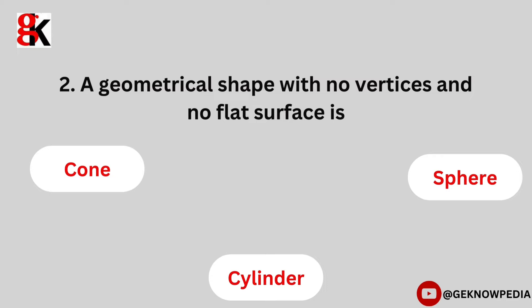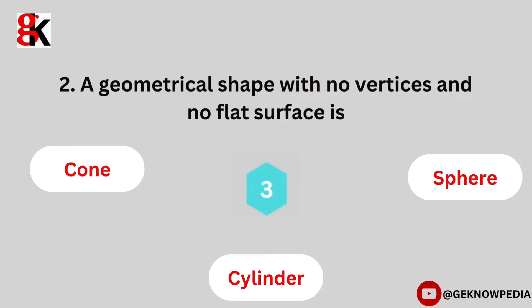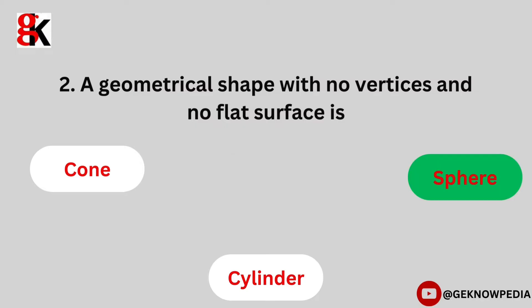Second question. A geometrical shape with no vertices and no flat surface is: Cone, sphere, cylinder. The correct answer is sphere.